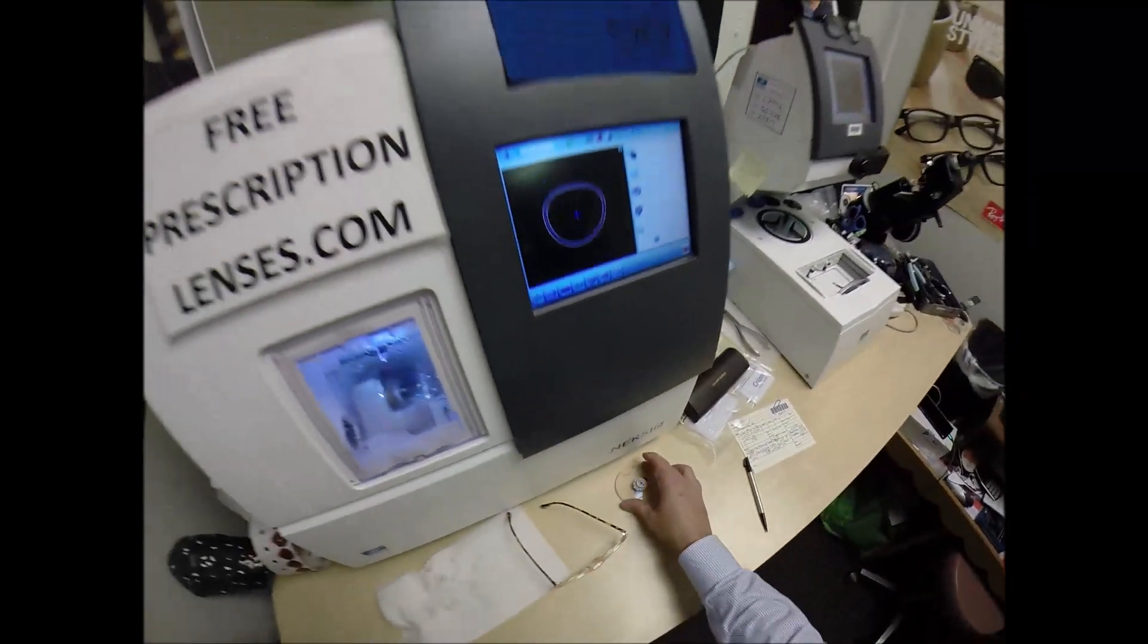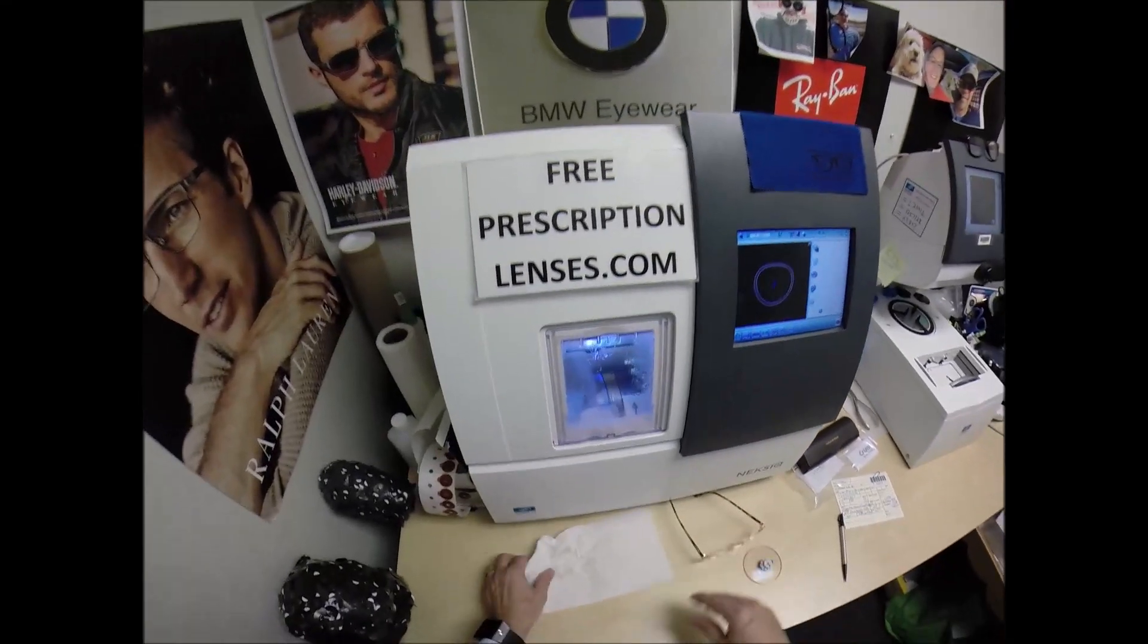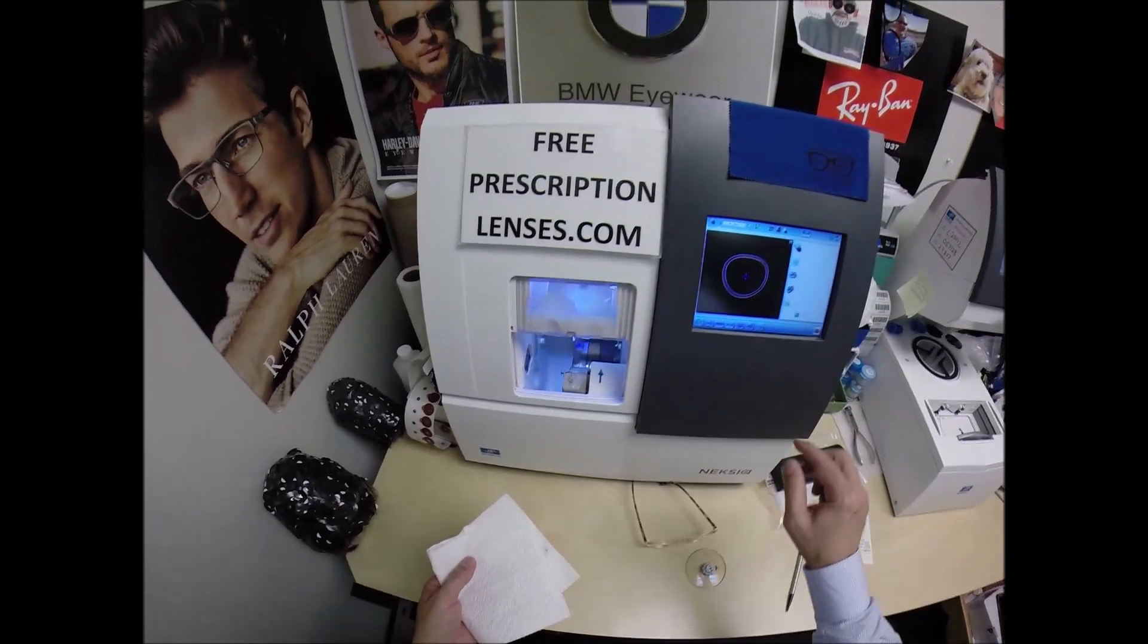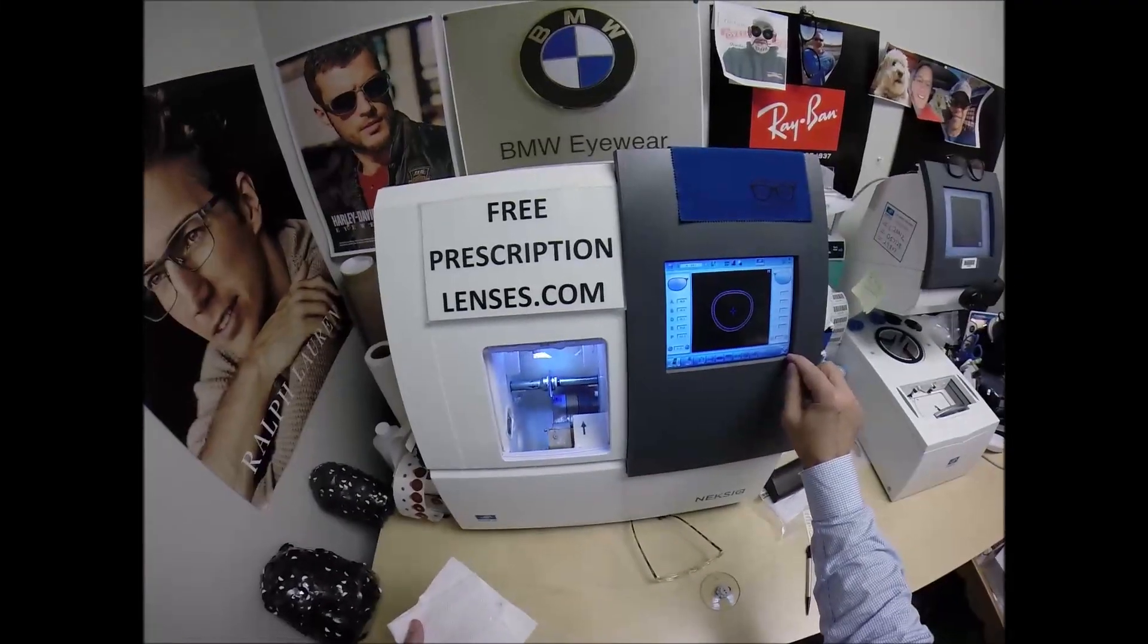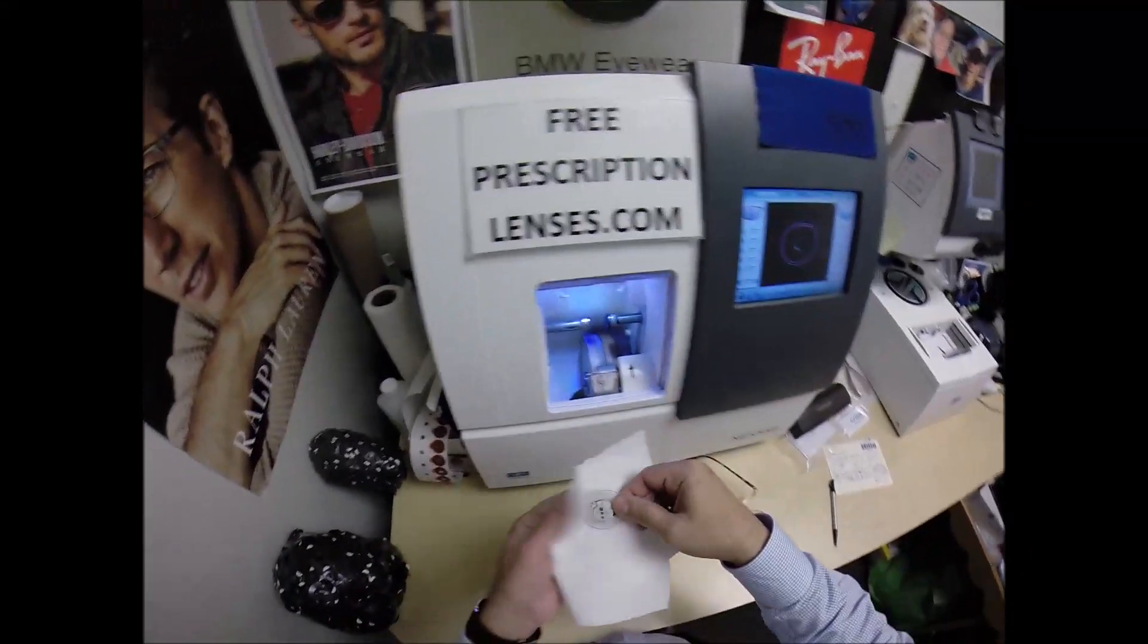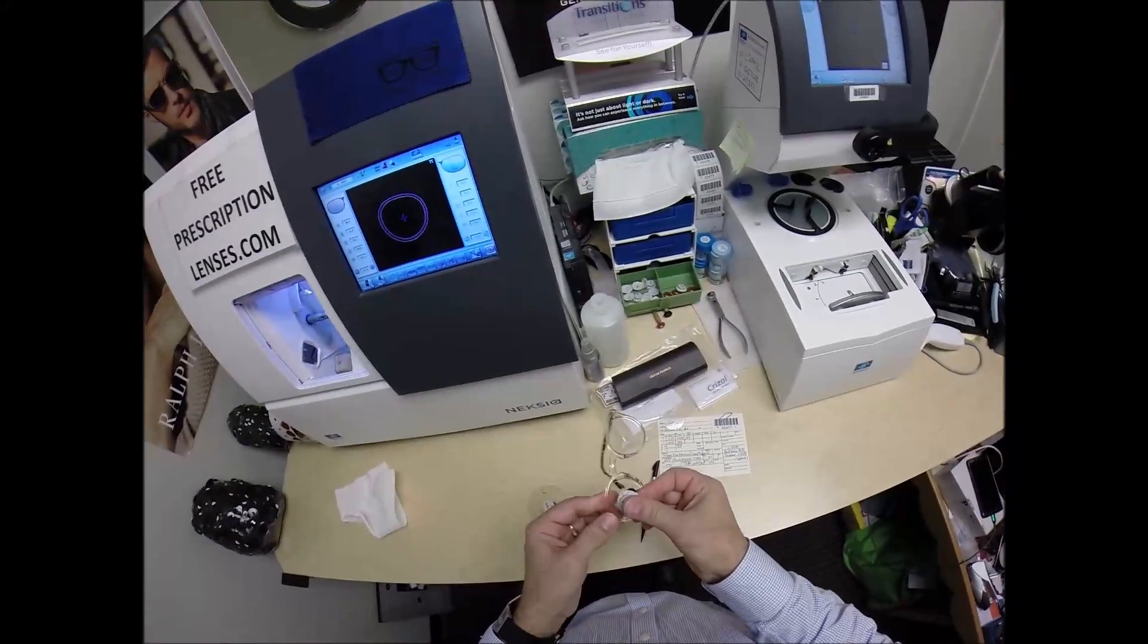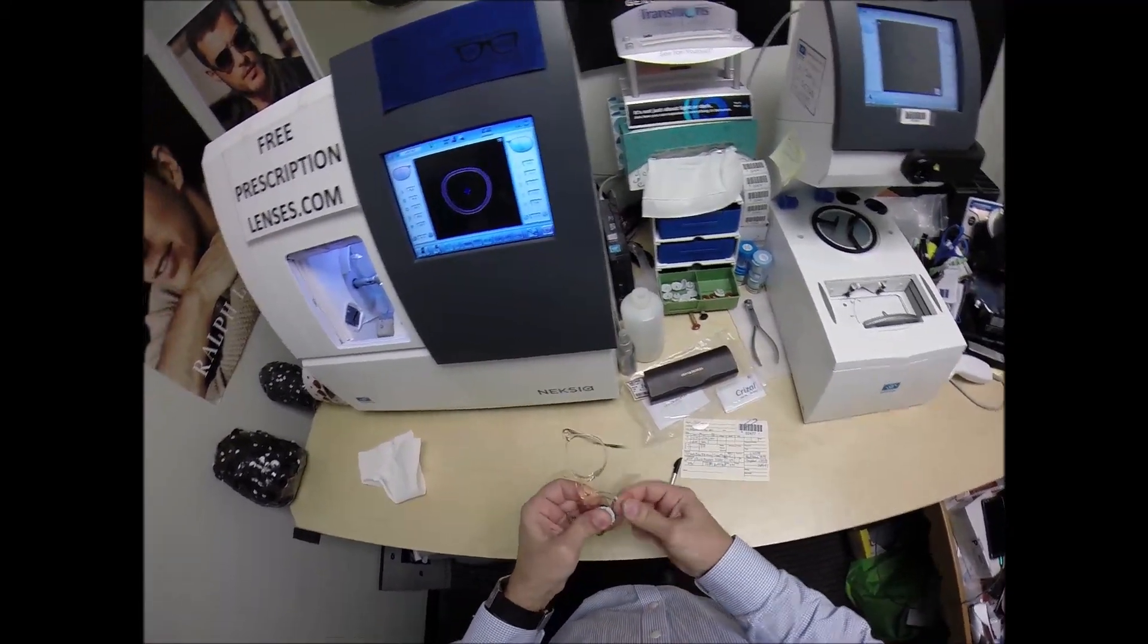The other nice thing about your Transitions Brown is that it blocks 30 to 40% of harmful blue light emitted from today's electronic devices such as cell phones, tablets, computer screens. Now it'll open. Dry everything off, see if it'll fit this time. No, let's take it down another tenth of a millimeter.